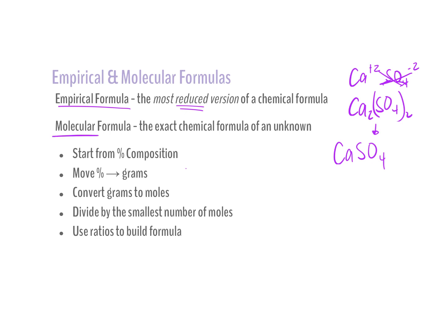On the other side, we work with molecular formulas, which are basically the exact formulas of a compound that are non-reduced. We typically see molecular formulas in covalent compounds, not ionic compounds. Ionic compounds are always reduced down to an empirical formula, but covalent compounds could be molecular, meaning they're non-reduced.